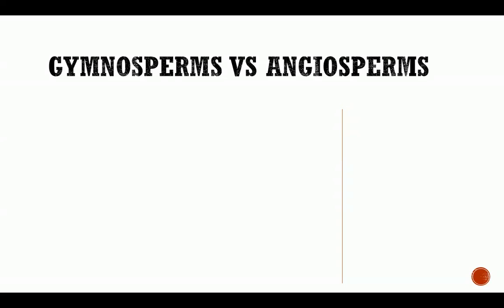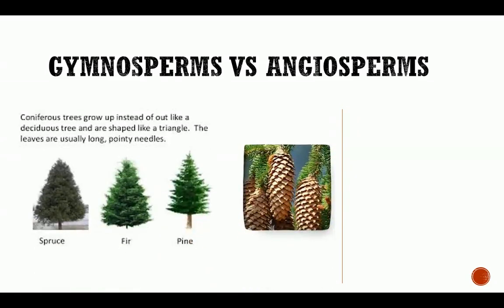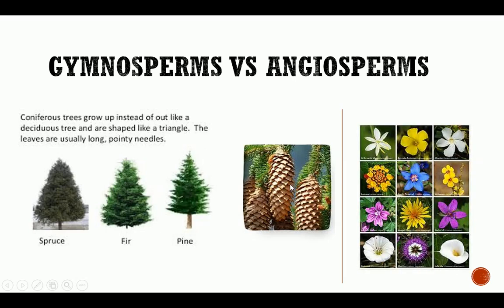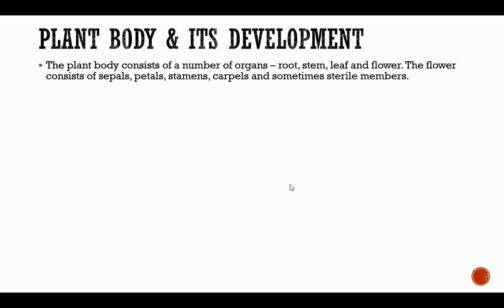Here we see gymnosperms versus angiosperms. Gymnosperms are the coniferous plants you may have seen around you — these are what the seeds look like and what the plant nature is. Angiosperms, known as flowering plants, have flowers. The plant body consists of a number of organs: the root, stem, leaf, and flower. The flower consists of sepals, petals, stamens, carpels, and sometimes sterile members.